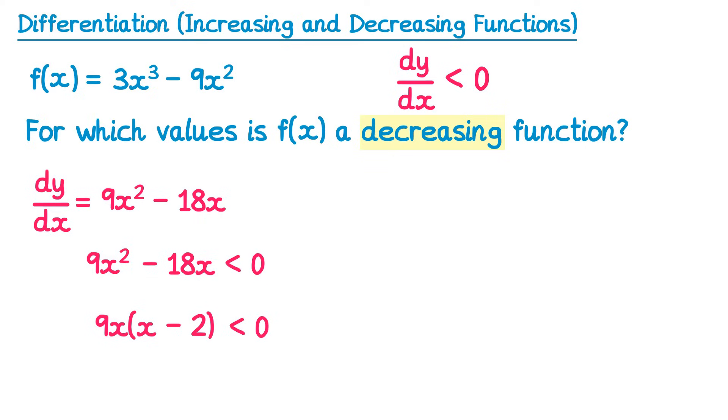This gives us two critical values. The 9x gives us x equals 0, and the x take away 2 gives x equals 2. If we drew the graph of this, it would cross at 0 and 2, and it's a quadratic so we'll get that classic U shape. We want to know when this graph gives a value less than 0. This corresponds to the section where we're below the x-axis. The x values that keep us below the axis are in between 0 and 2.